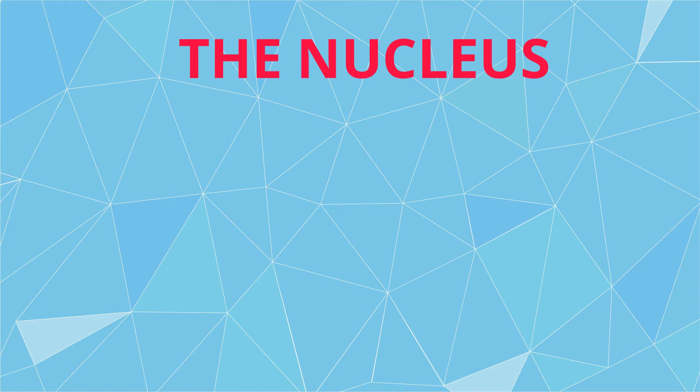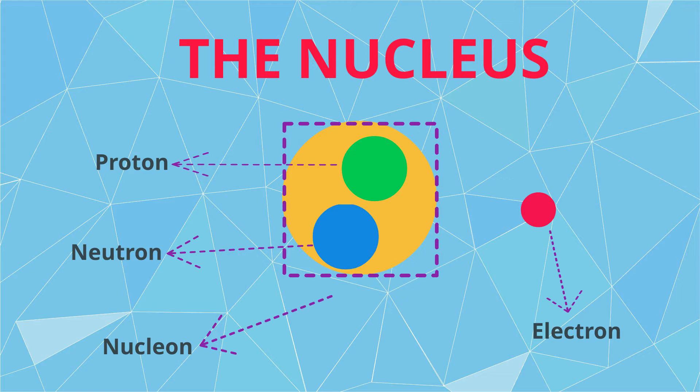Let's start with the basics — understanding the nucleus of an atom. An atom consists of electrons and a nucleus, which also consists of protons and neutrons, which are also known as nucleons. Electrons are negatively charged particles that orbit around electron shells, while protons are positively charged particles.